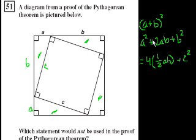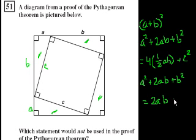Let's see if we can simplify this. So you get a squared plus 2ab plus b squared is equal to 4 times 1 half is 2ab plus c squared. We can subtract 2ab from both sides of this equation. Subtract 2ab from there, subtract 2ab from there. And you're left with a squared plus b squared is equal to c squared, which is the Pythagorean theorem. And we've proved it.